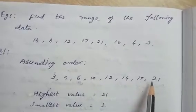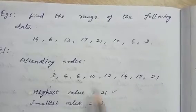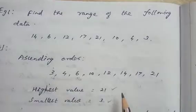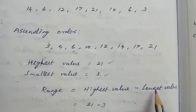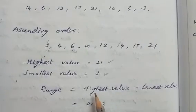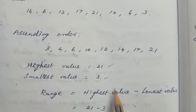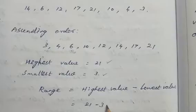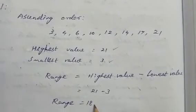In the given data, the highest value is 21 and the smallest value is 3. Range is equal to highest value minus lowest value, so range equals 21 minus 3, which equals 18. Therefore, range is equal to 18.